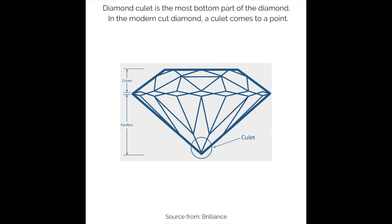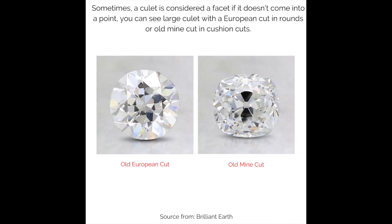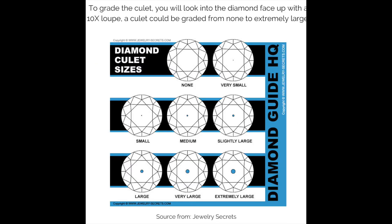The culet is the most bottom part of the diamond. In the modern cut diamond, a culet comes to a point. Sometimes a culet is considered a facet if it doesn't come to a point. You can see a large culet with European cut rounds, old mine cuts, and cushion cuts.